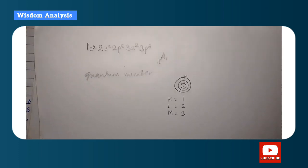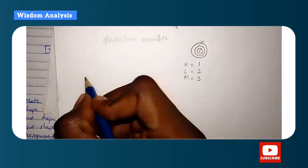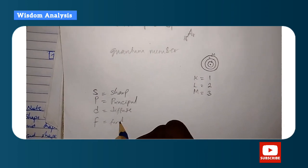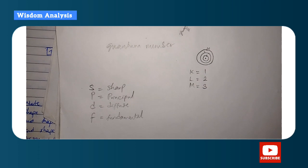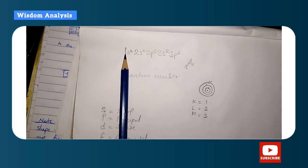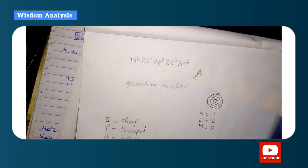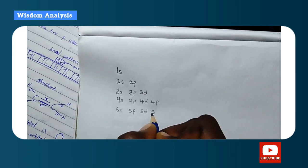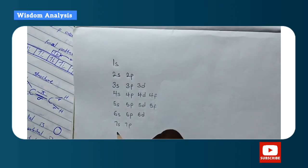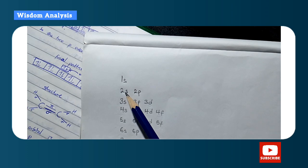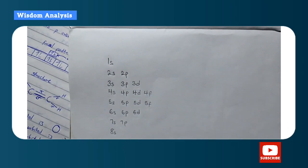You can also see letters like s and p — these are called orbital sets or subshells. Each shell is broken down into four subshells: sharp (s), principal (p), diffuse (d), and fundamental (f). Shell one has only the s subshell; shell two has s and p; shell three has s, p, and d; shell four has s, p, d, and f.